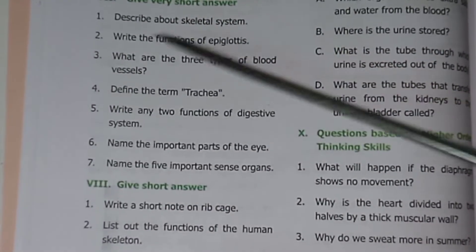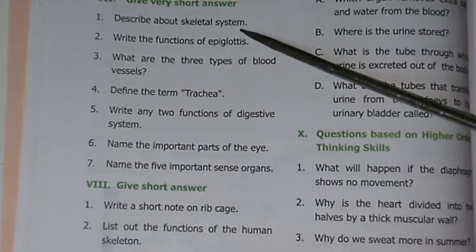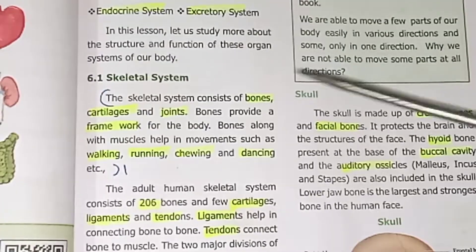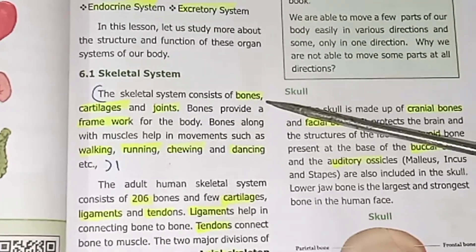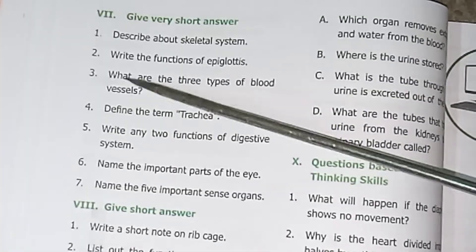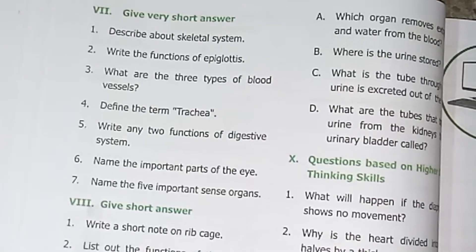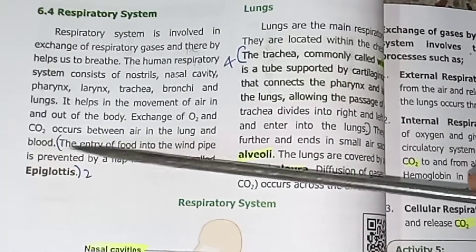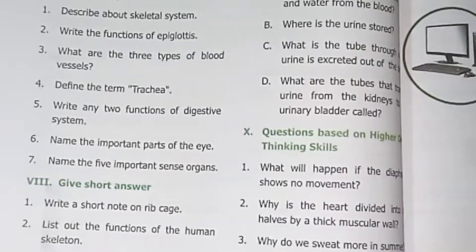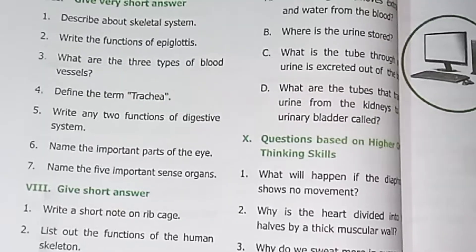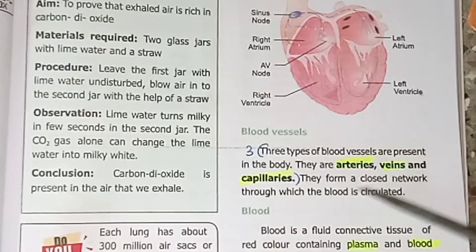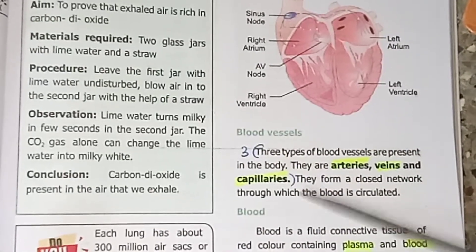Promoter 7: Give very short answers. First: Describe the skeletal system — page number 69, the skeletal system consists of bones. Second: Write the function of muscles — page number 74. Third: What are the three types of blood vessels? Page number 75 — arteries, veins, and capillaries. Fourth: Define the term trachea — page number 74, the trachea enters into the lungs.